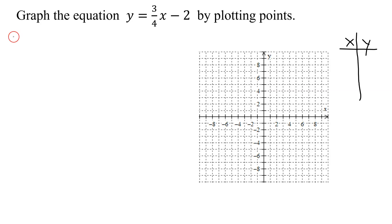The first x value I always use is 0. I call it my lazy arithmetic point because when x equals 0, y equals three-quarters of 0, so three-quarters times 0 minus 2.